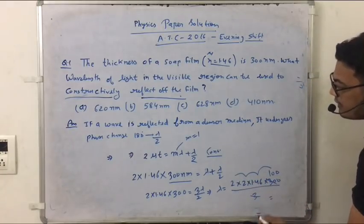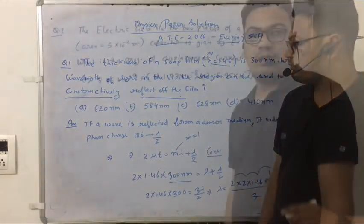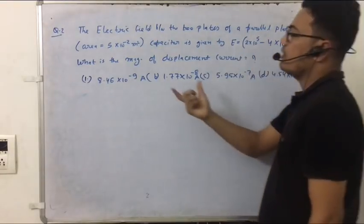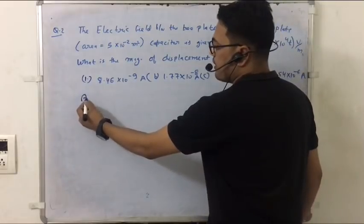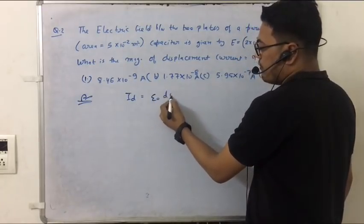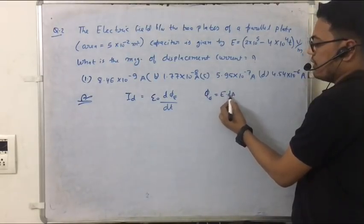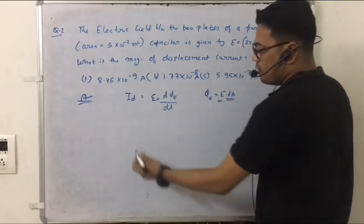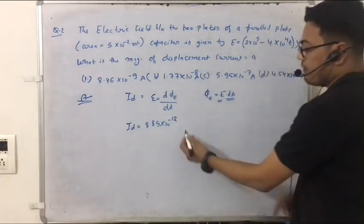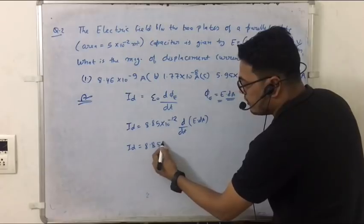Next question. The electric field between the two plates of a parallel plate capacitor with given area and what is the magnitude of displacement? So friends, what is the displacement current? If you have Ampere's law, then this is the formula: epsilon naught d phi E upon dt. This is the electric flux. So you will know what is the electric flux, that is E dot dA, electric field.